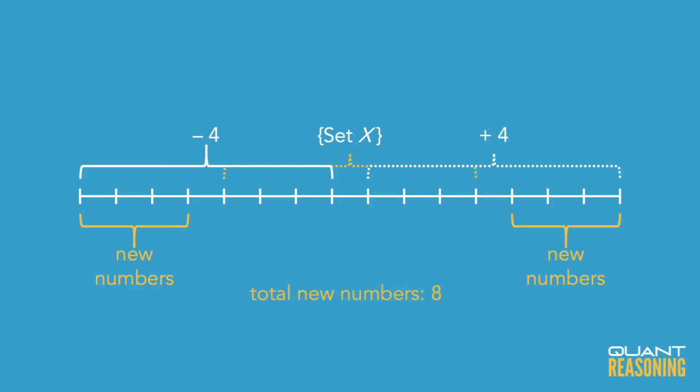So at the end of the day, when they ask how many more numbers will the new set have compared to the original set, it will be four new numbers on top and four new numbers on the bottom, for a total of eight.